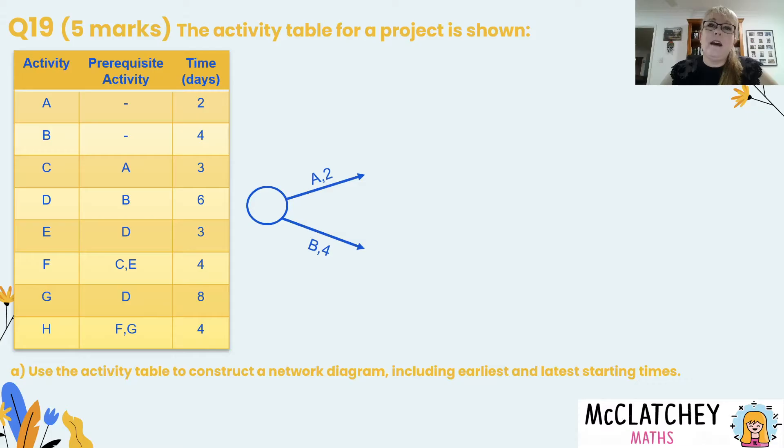We always start with a circle at the very beginning to show the start of the entire project and then branching out of there we have our activities A and B and we actually write on the edges the name of the activity and its duration. When the activity finishes we draw some new vertices in. So we've got started there with activity A and activity B.